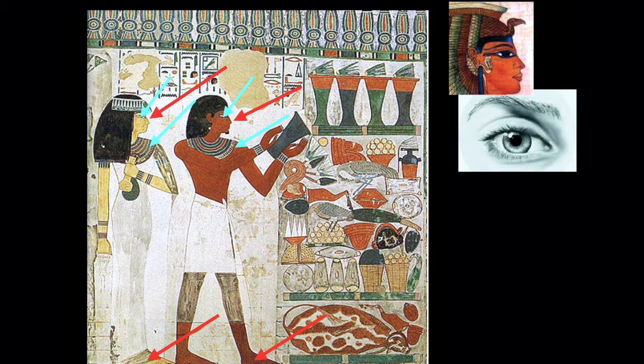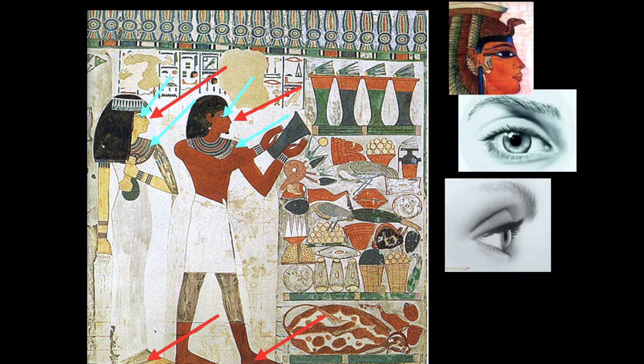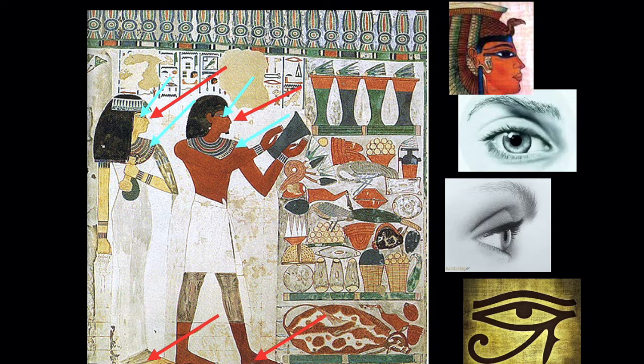If it were a sideways-facing eye, it would look different. The forward-facing eye became such an important symbol in Egyptian culture that it even has a name: it's called a ujat, or the Eye of Horus, and it has a specific meaning — protection, royal power, and good health. You see the Eye of Horus in a lot of Egyptian artworks.